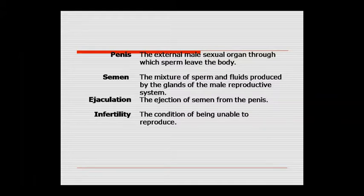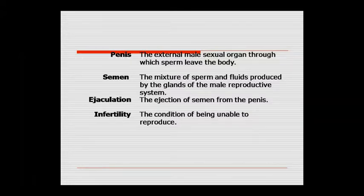Semen — इसमें sperm और fluid mix होते हैं। यह sperm and fluid का mixture है, जो की male reproductive system की glands के द्वारा produce होता है। Ejaculation — semen को penis से बाहर निकालना, eject करना ही ejaculation कहलाता है। Infertility — जब कोई male या female reproduce करने में unable हो जाता है, उस condition को infertility कहते हैं।